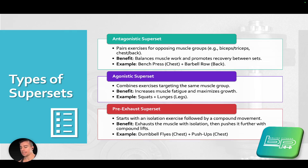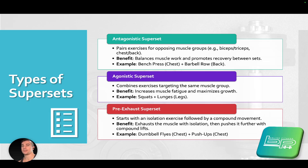With antagonistic supersets, even though the exercises are opposite, they complement each other. Biceps and triceps are both arm-based workouts, and chest and back are directly opposite but in the same muscle area. This gives you an overall balanced routine and helps prevent muscle imbalances by specifically targeting those two opposing sides.